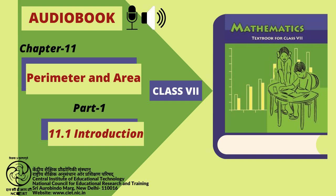Try these. 1. Experiment with several such shapes and cutouts. You might find it useful to draw these shapes on squared sheets and compute their areas and perimeters. You have seen that increase in perimeter does not mean that area will also increase. 2. Give two examples where the area increases as the perimeter increases. 3. Give two examples where the area does not increase when perimeter increases.